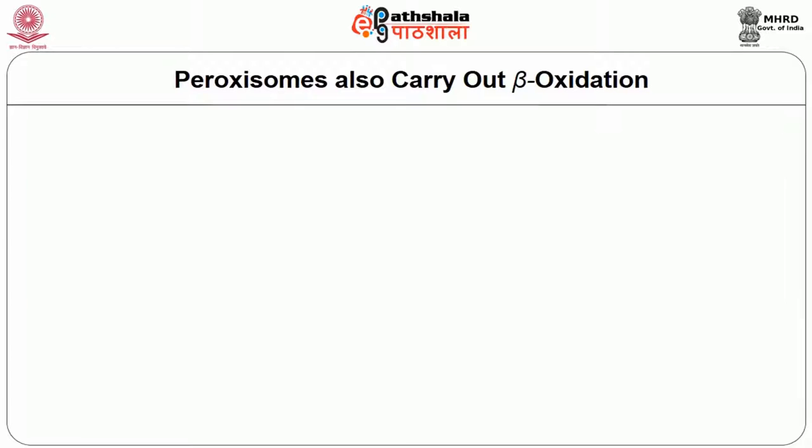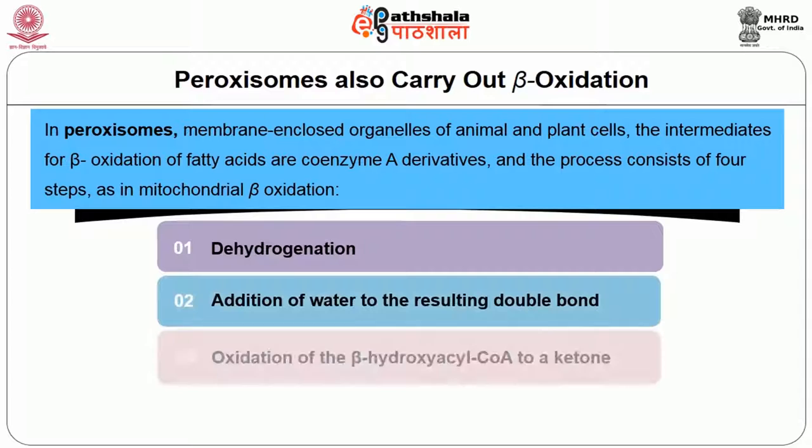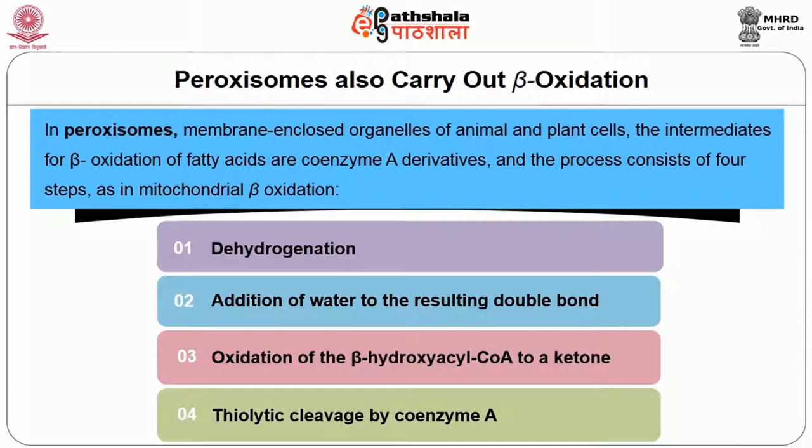In peroxisomes — membrane-enclosed organelles of animal and plant cells — the intermediates for beta oxidation of fatty acids are coenzyme A derivatives, and the process consists of 4 steps as in mitochondrial beta oxidation: dehydrogenation, addition of water to the resulting double bond, oxidation of beta-hydroxyacyl-CoA to a ketone, and thiolytic cleavage by coenzyme A.